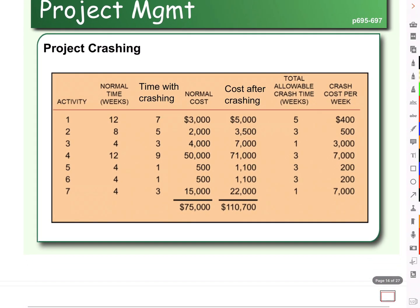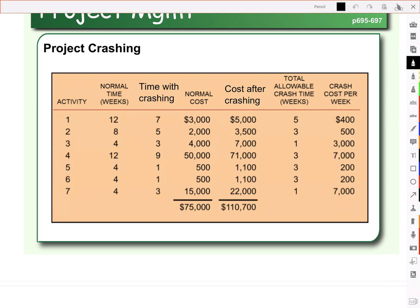So how do we do that? We need to know our crash cost per week, and we need to know the total allowable crash time. That is, each activity you can shave off a bit of time, but you can't get rid of the whole activity in its entirety. So if activity one normally takes 12 weeks and we think we can get it down to seven, that means that we have up to five weeks we can shave off.